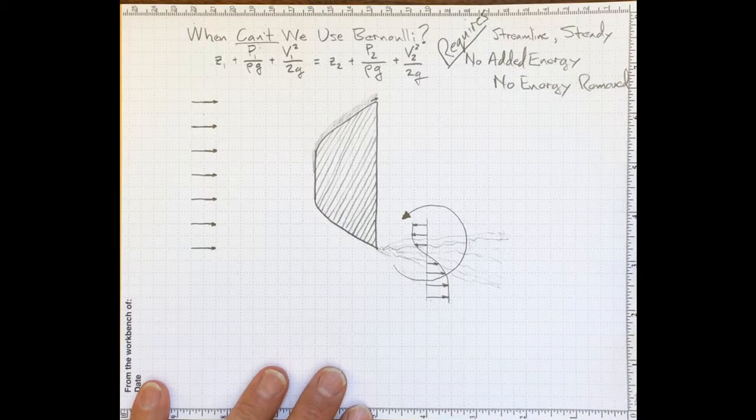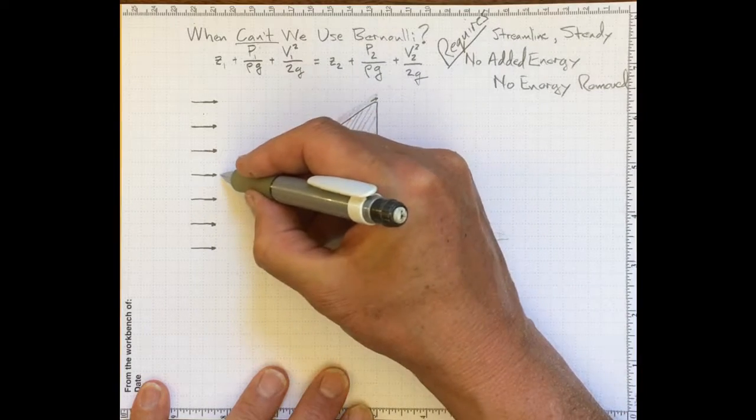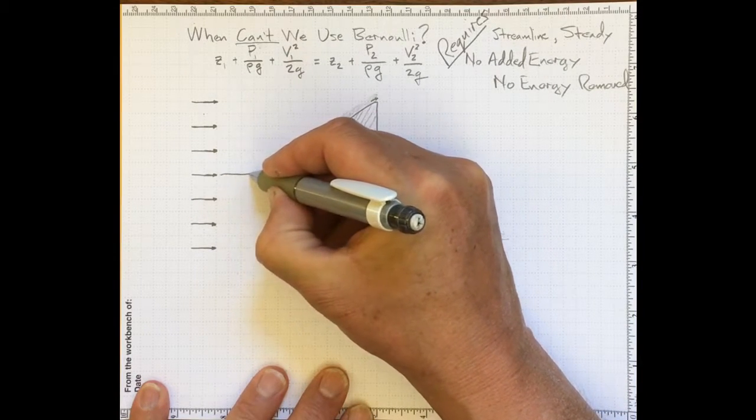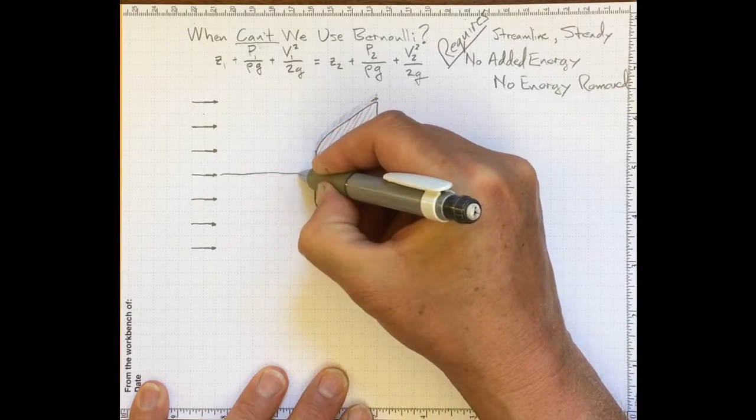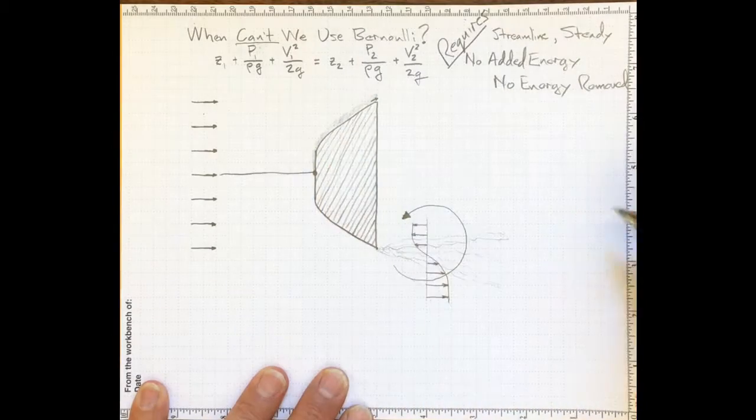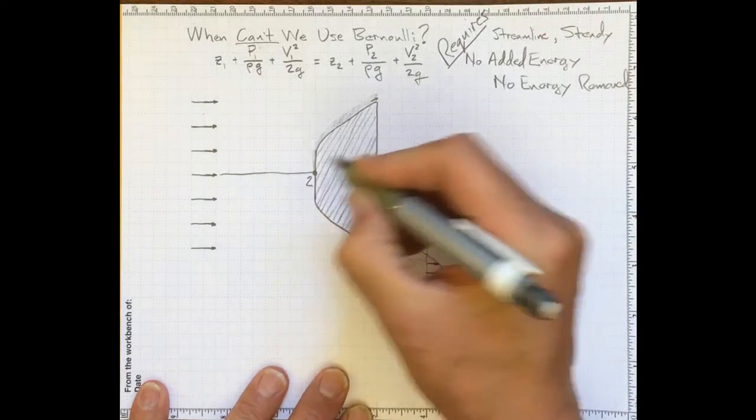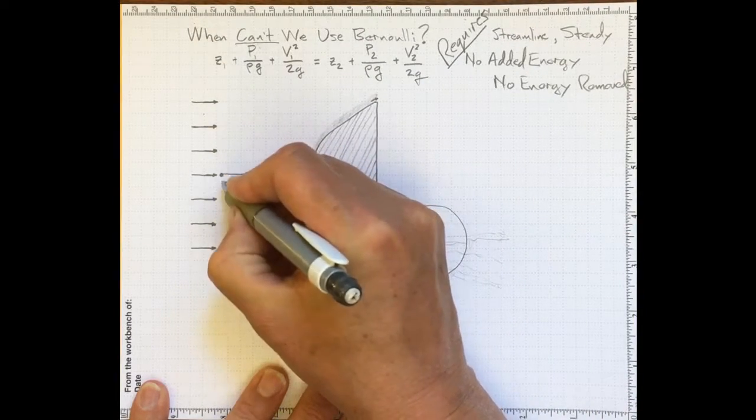Bernoulli's equation applies only on streamlines, so we'll need to draw some streamlines for this flow. If this system is symmetric above and below, then the first streamline I'm going to draw is one that comes right in here and hits right on the front at a stagnation point. So we'll call that point two, and this point upstream, point one.